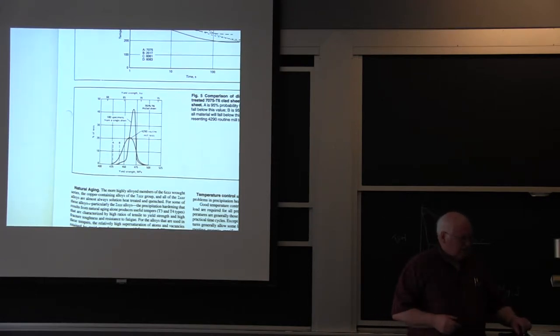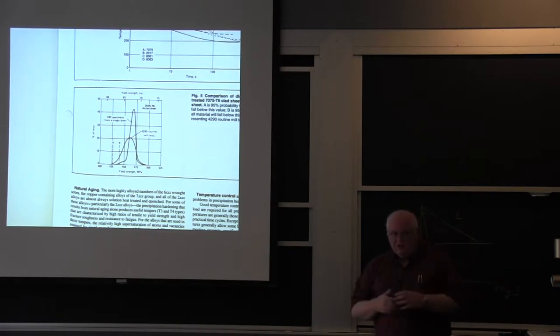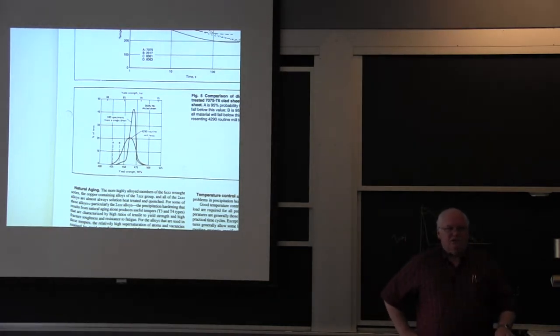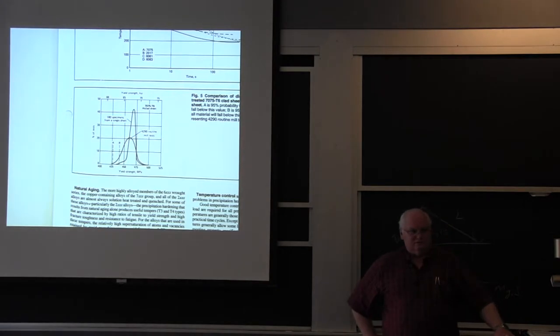Not necessarily readily weldable. But what does it mean, A and B? Anybody know what A and B in aluminum is? It has to do with how tight your mechanical properties are going to be. And I will now tell you a secret.